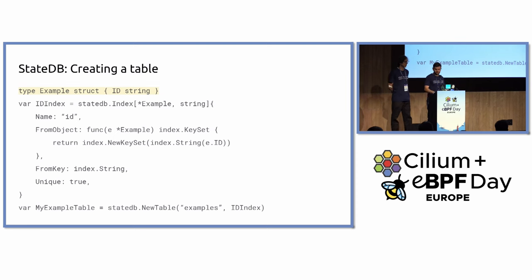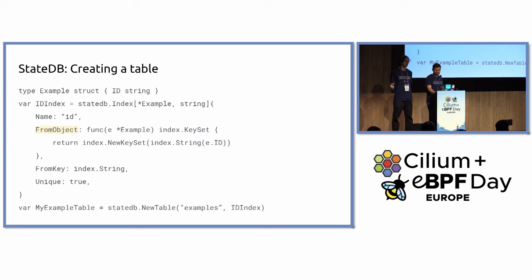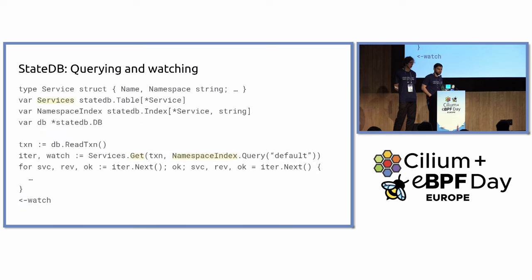Here's a quick example of how the code looks in Go. To create a table, you first define your data type — this can be anything from structs to more complicated types. You define your index — two methods telling StateDB how to go from your custom data type into the internal database key, which are essentially byte slices. You also define how to go from a search key, which can be any data type, into a database key. Finally, you create a table giving it a name, a primary index, and optionally any number of secondary indices.